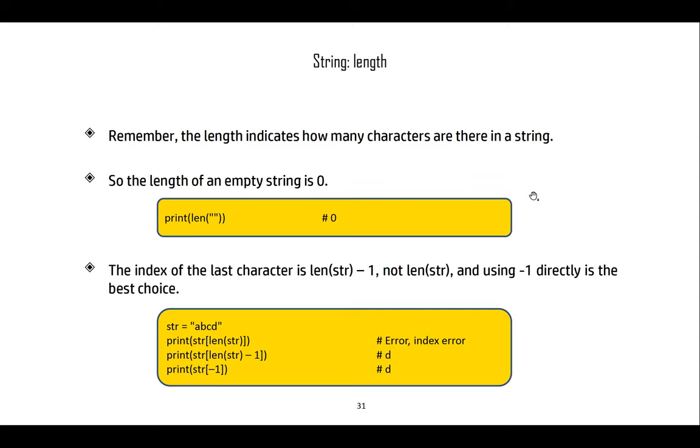Remember that the length indicates how many characters are inside the string. A length zero string will have zero characters, and there is no character at index zero. The last character is always at len minus one, not len. If you want to access the last character inside a string, you don't need to use len minus one—you can simply use the minus one index, as we have seen previously.